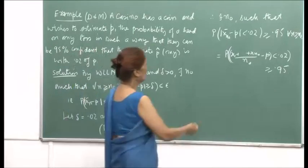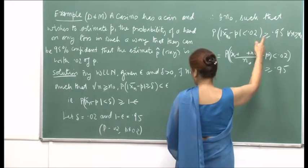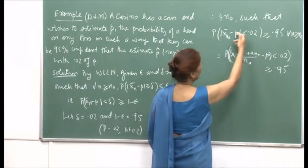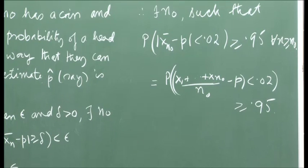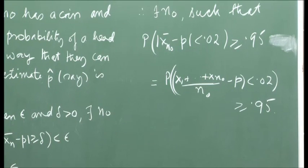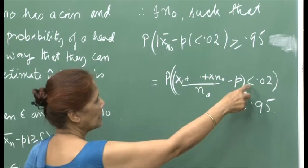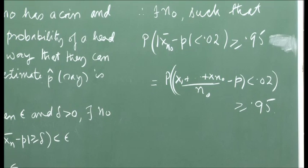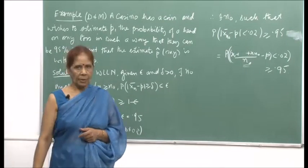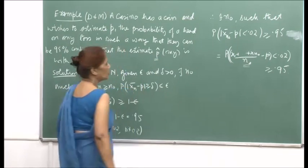So we write out: the probability that |(x1 + x2 + ... + x_{n_0})/n_0 - p| < 0.02 should be >= 0.95. You can find such an n_0, and therefore the casino can, by tossing the coin that many times, find the estimate p-hat for the probability p.